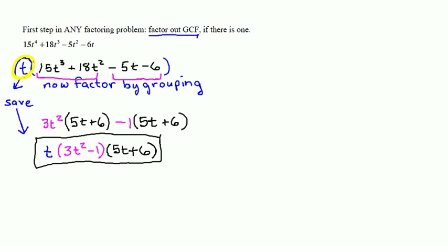Now incidentally, had you not noticed that GCF in the very beginning and had just done factoring by grouping instead, what you would have as a result is what we get by distributing this T here into the first set of parentheses, but not the second. It would be 3T cubed minus T times 5T plus 6.